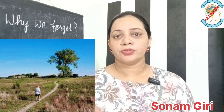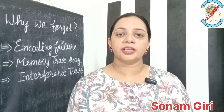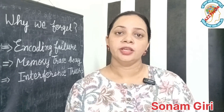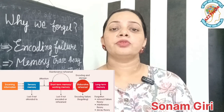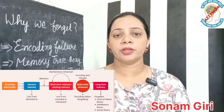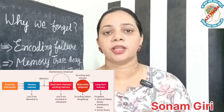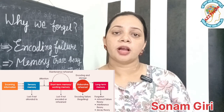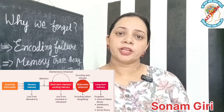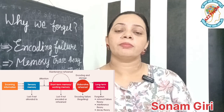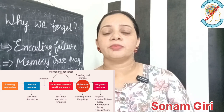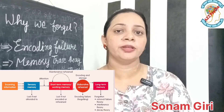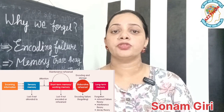If we don't use the trace, the grass will grow back and we will not be able to use the path. If we don't use the information, it will decay. This is why we call this memory trace decay. In short-term memory, if we don't use the information, it doesn't transfer to long-term memory. We use it or lose it — if we use the information, it saves in memory, and if we don't use it, it is lost.